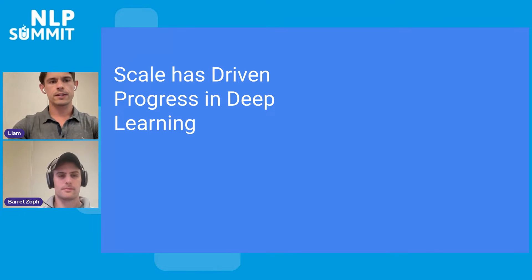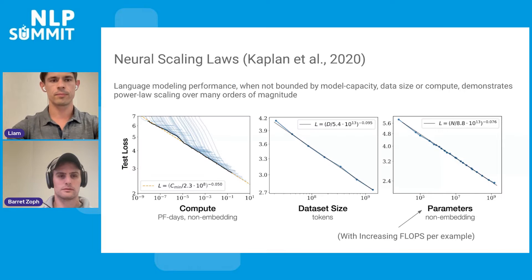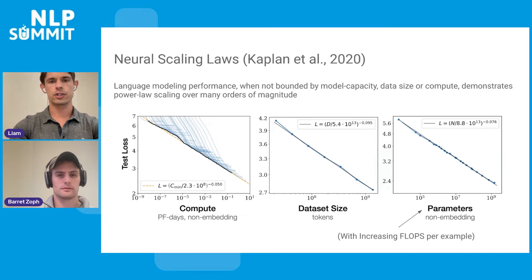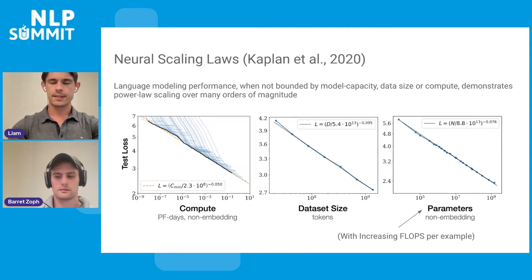Scale has driven significant progress in deep learning, and in particular, natural language processing. In 2020, Kaplan et al. found the neural scaling laws. They found that language modeling performance, when not bounded by model capacity, the amount of data, or the compute, demonstrates a power law scaling over many orders of magnitude. This has led to extremely predictable performance for language models and has permitted the industry to scale up at a relatively reduced risk.